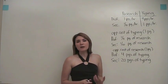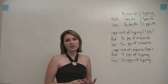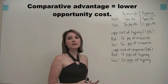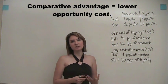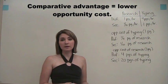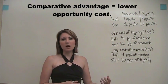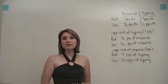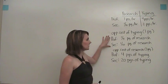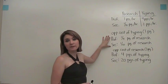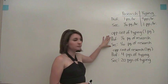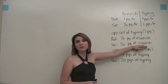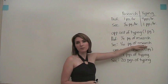Rather than absolute advantage, let's think about another economic measure called comparative advantage. One party is said to have a comparative advantage in an activity over another if they have a lower opportunity cost of producing that activity. In this example, the secretary has a comparative advantage over the professor in typing because she doesn't have to give up as much to type one page.